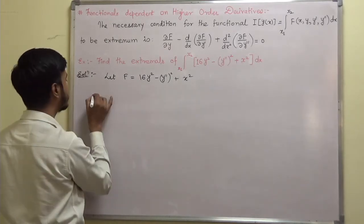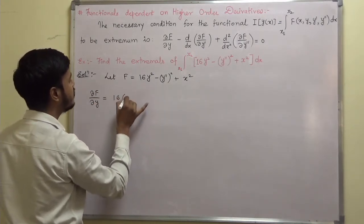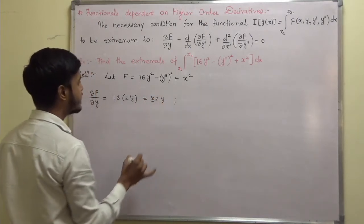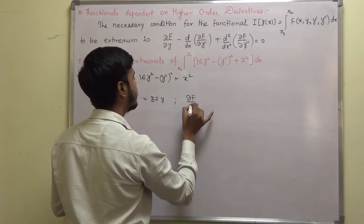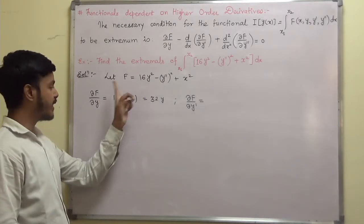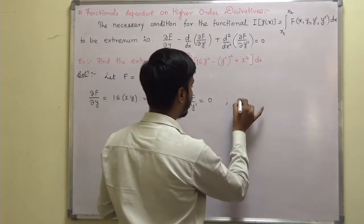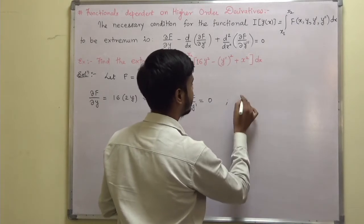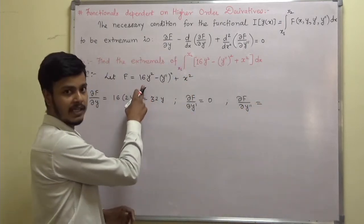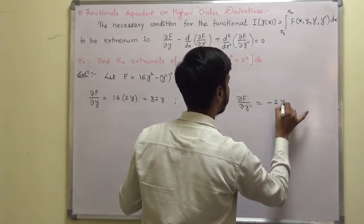The next step is to find all the derivatives needed for the Euler's equation. del f / del y: derivative of 16y² with respect to y is 32y. del f / del y': there is no term in y', so this is 0. del f / del y'': the term is minus (y'')², so the derivative is minus 2y''.